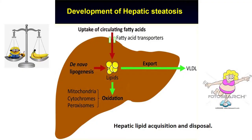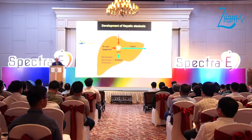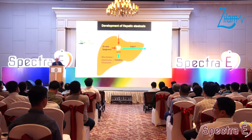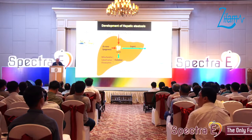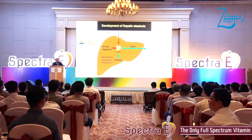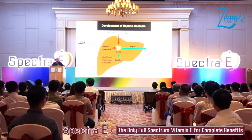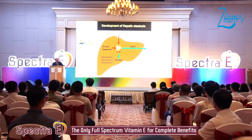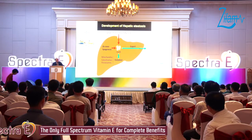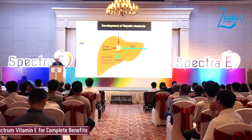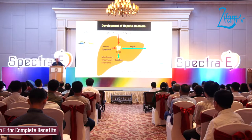Moving on to the hepatic development of hepatic steatosis — as you all know, the liver is the main organ for lipid homeostasis. Fatty liver is simply the accumulation of fat in the liver. The cause of this fat accumulation comes down to the balance between fat acquisition and fat utilization.